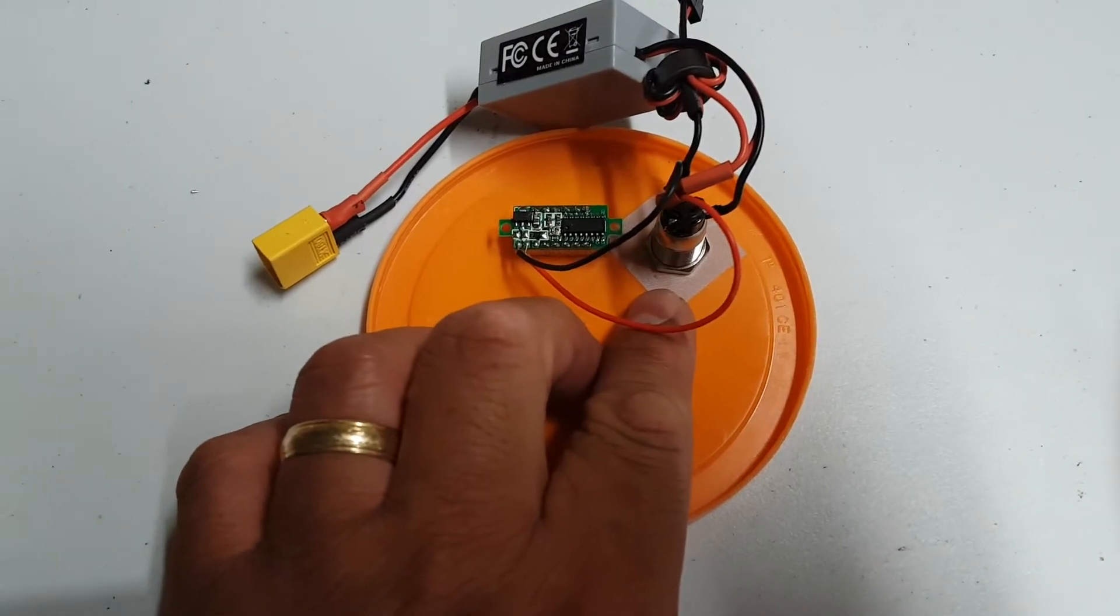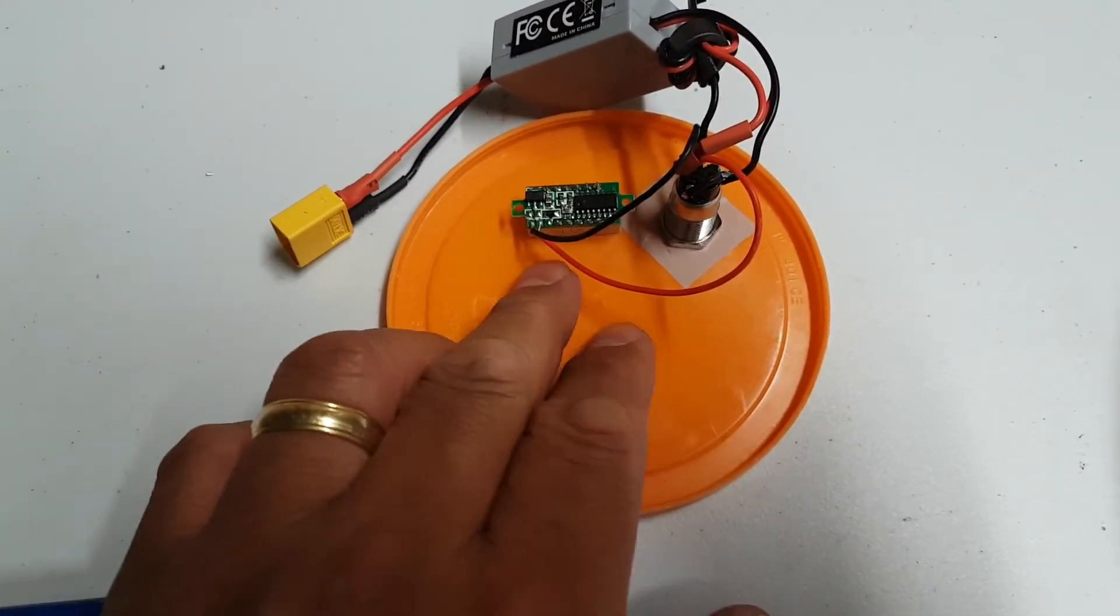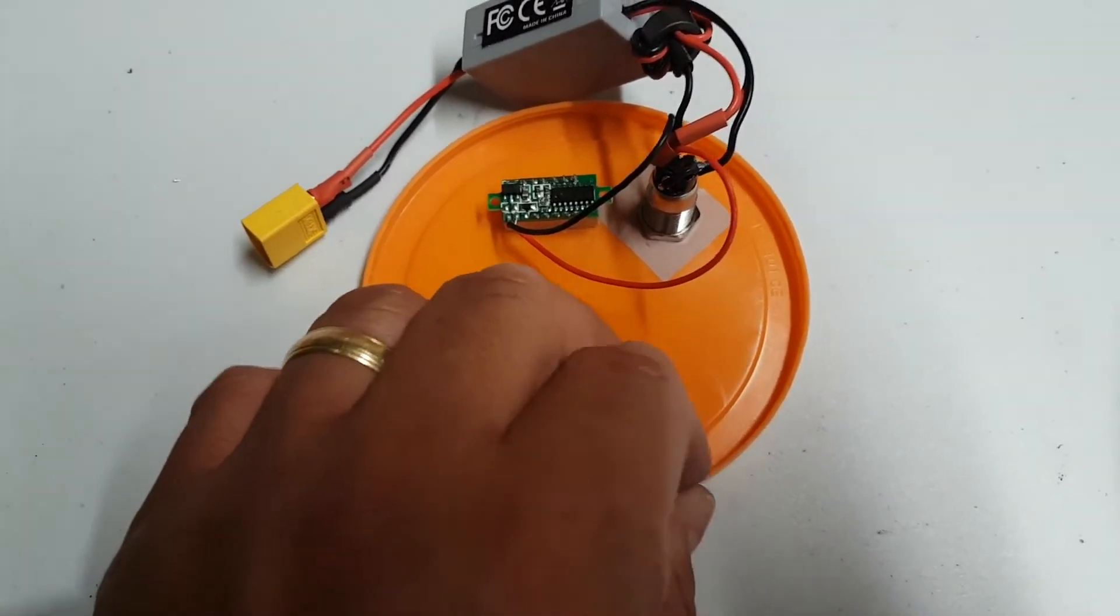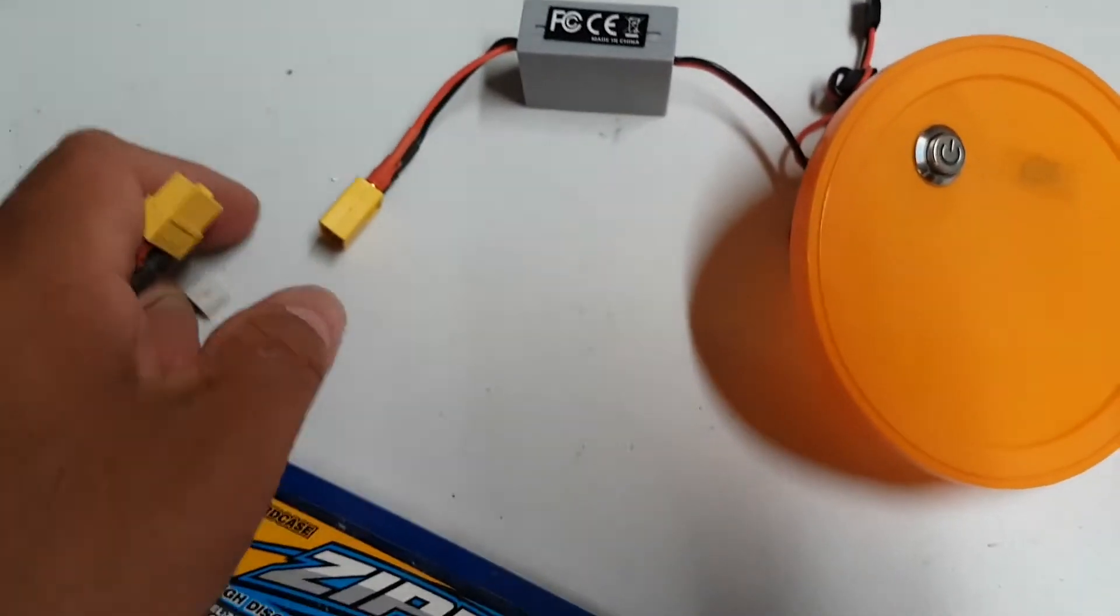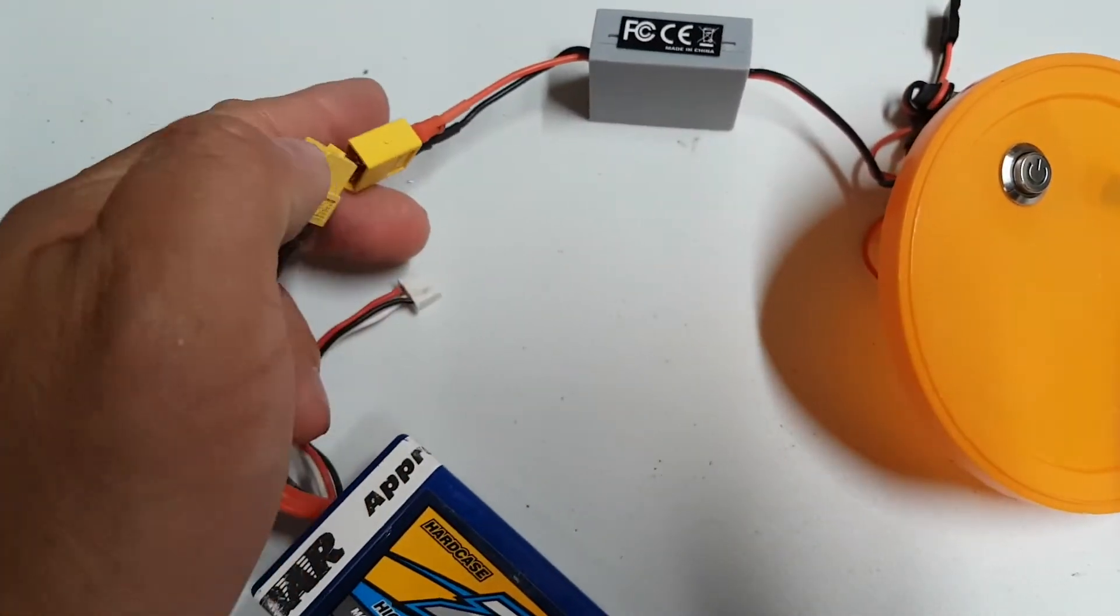And over here what I've done is I've also wired in an illuminated switch and this unit here tells me the voltage. So how I have it set up is basically when I plug it in.